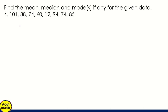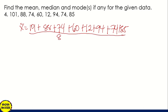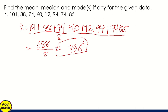Let's start to solve the value of mean. We add 101 plus 88 plus 74 plus 60 plus 12 plus 94 plus 74 plus 85. We have 8 values, so we divide by 8. The sum is 588, so 588 divided by 8 gives us 73.5. So 73.5 is the mean.